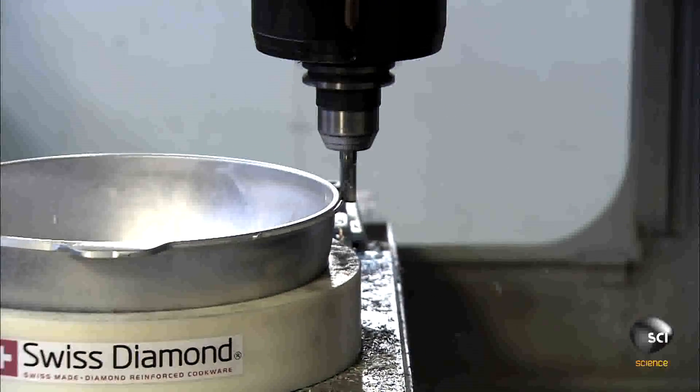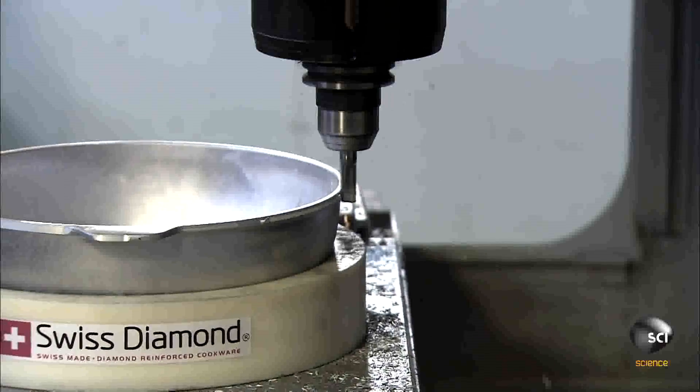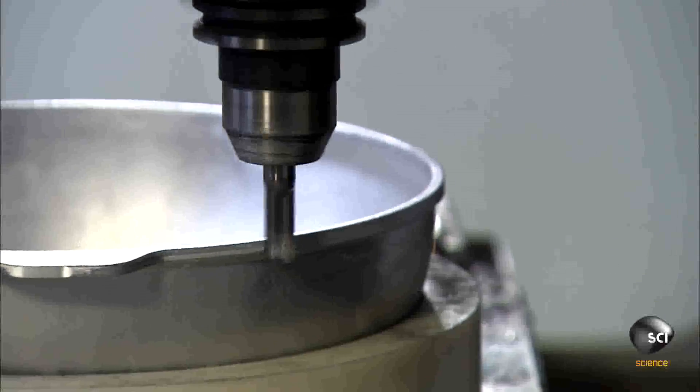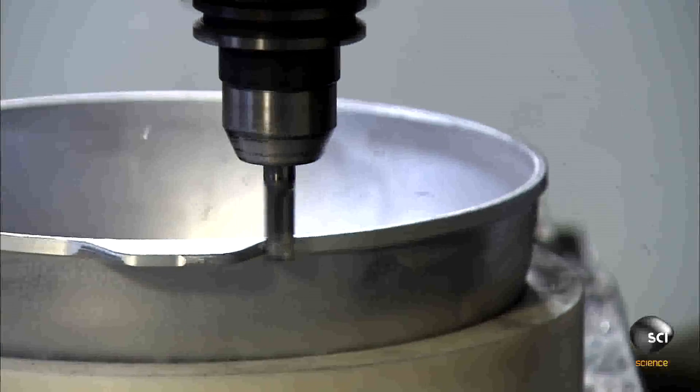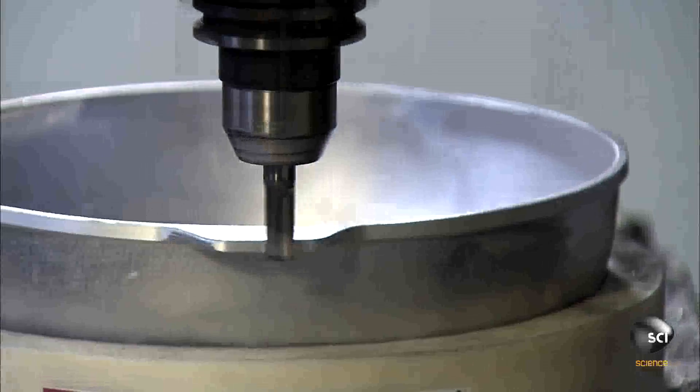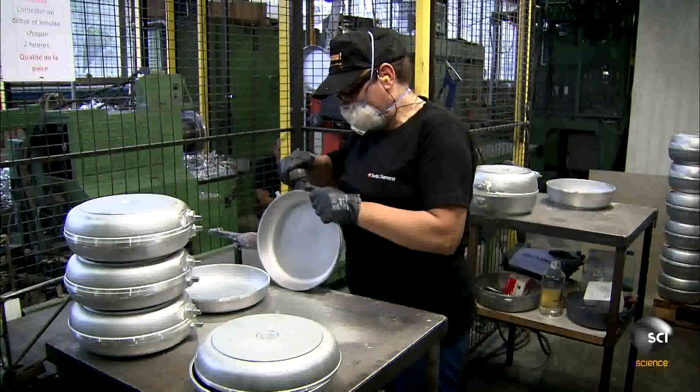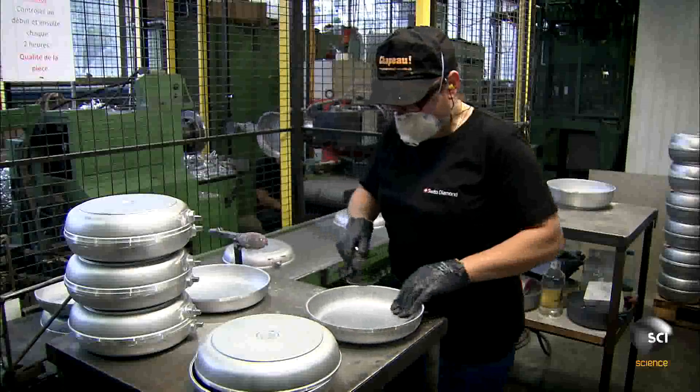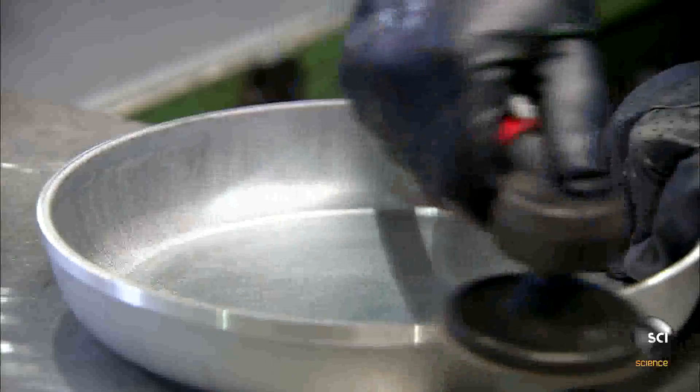They cut off the excess using a computerized tool. The table moves as the tool cuts the edge of the pan to specifications. A worker sands the edges and rounds the rim of the pan a little more.